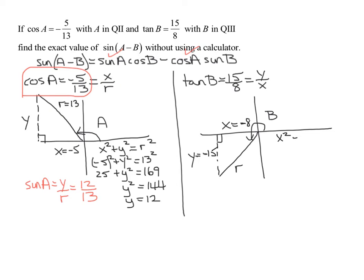Guess how we're going to find R. X squared plus Y squared equals R squared. So negative 8 squared plus negative 15 squared is R squared. Negative 8 squared is positive 64. Negative 15 squared is 225. Add those together. We get R squared is 289. And remember, R is always positive. It's the positive square root of 289. So R is going to equal 17.